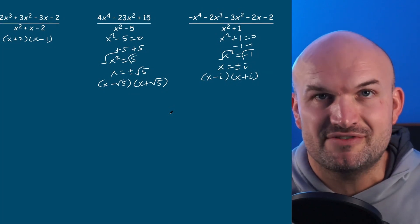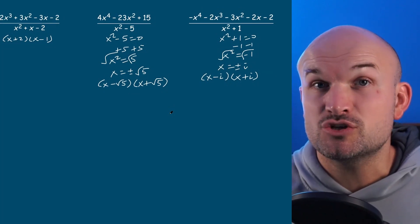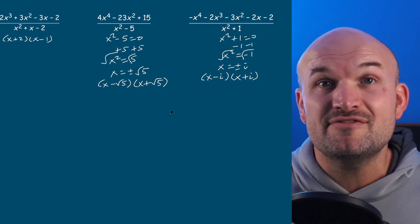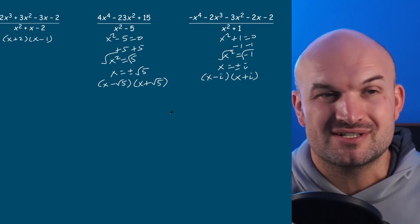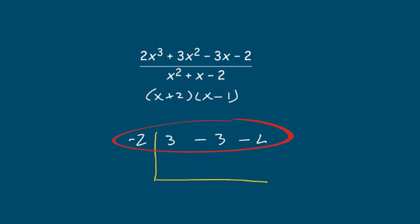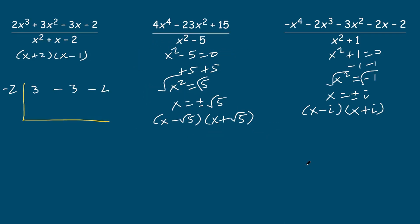Now we're ready to get started with synthetic division. We have to do synthetic division twice for each of these linear factors, so we just need to pick one factor to go first. In this first example, I'll use the factor x plus two to divide into my polynomial. Therefore, I'll have negative two on the outside and my coefficients two, three, negative three, and negative two listed inside the synthetic division box. In the next example, I'll go ahead and use x minus square root of five as my factor, then use the coefficients four, negative twenty-three, and fifteen.